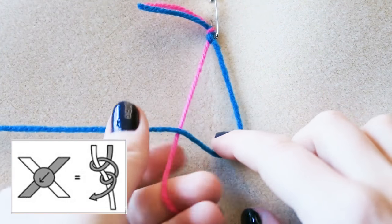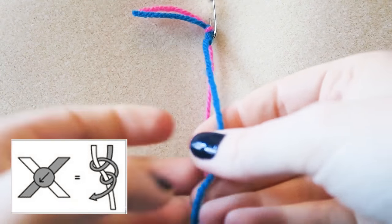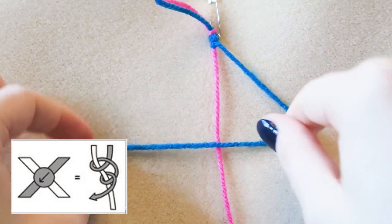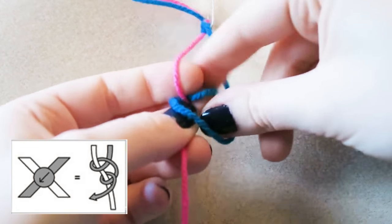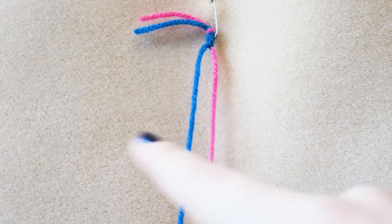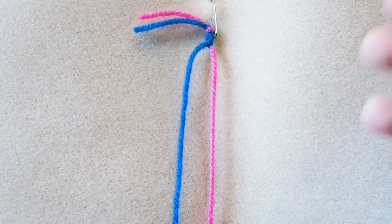And then much like before, we're going to wrap the blue around the pink and up through the loop and pull that up. And then because every knot is done twice, we're going to repeat that. So backwards four, wrap the blue around the pink and pull up. And now you'll see that the blue is now back on the left hand side of the pink.